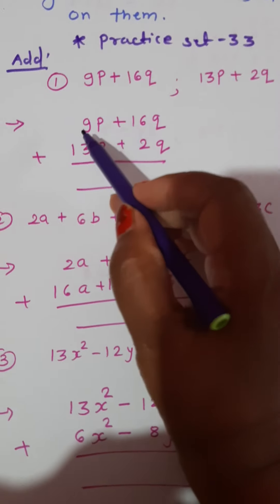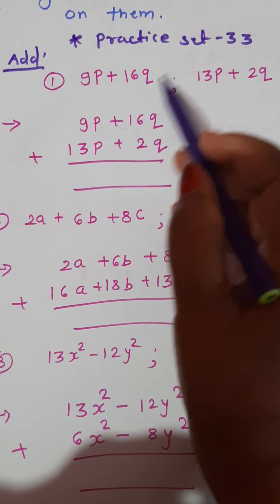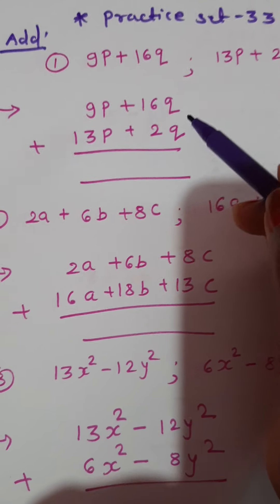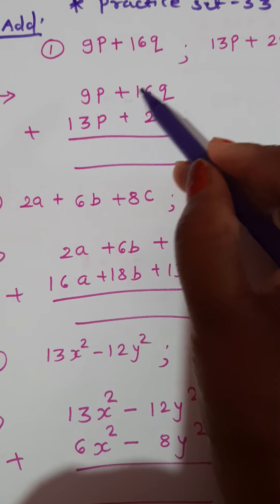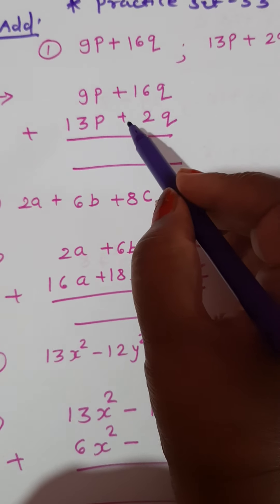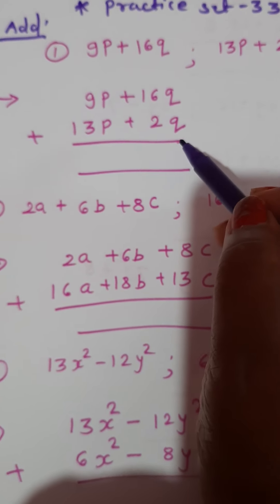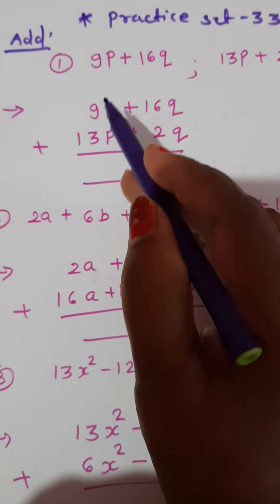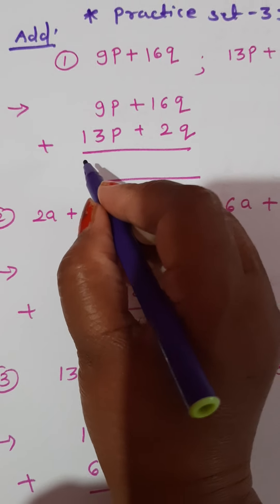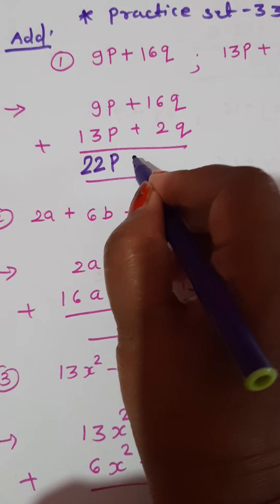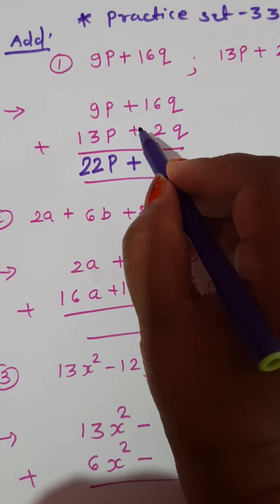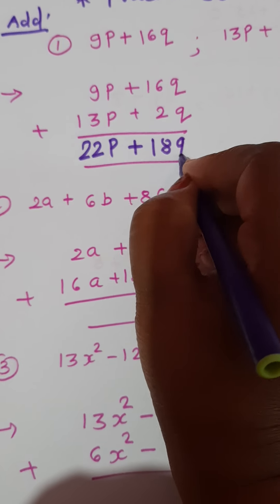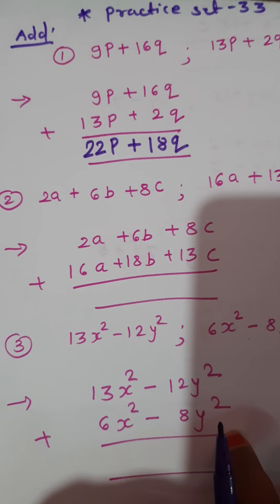Write down 9p plus 16q, and downside of 9p write 13p plus 2q. I have written both equations in vertical arrangement: 9p plus 16q, plus 13p plus 2q. Now it is a very simple addition — add the numbers and write the variable as it is. 13 plus 9 is 22p, and 16 plus 2 is 18q. This is the first addition of algebraic expressions.